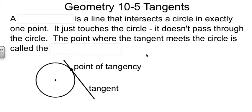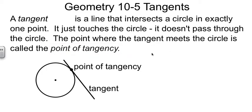This is Geometry, Chapter 10, Section 5, in which we will study tangents. When we talk about a tangent, we're really talking about a line that intersects the circle in one point. It just touches the edge of the circle. It doesn't go inside. And that point where it does touch has a special name called the point of tangency.